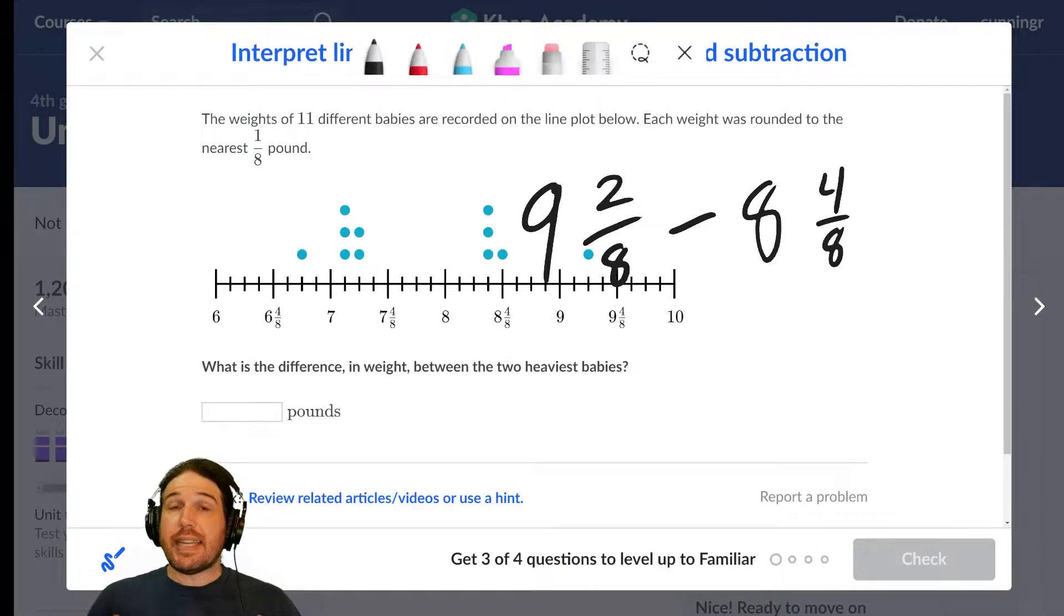Again, difference is a mathematical vocabulary word. When you say difference, you almost always mean subtraction. How different are they? Well, you find that by taking the bigger one, in this case, nine and two eighths pounds, and subtracting the smaller one to find the difference between the two. It's one of those words that means the same thing both in English and in math. So let's see here. Well, I'm already seeing a problem here because two minus four is going to give us a negative number.